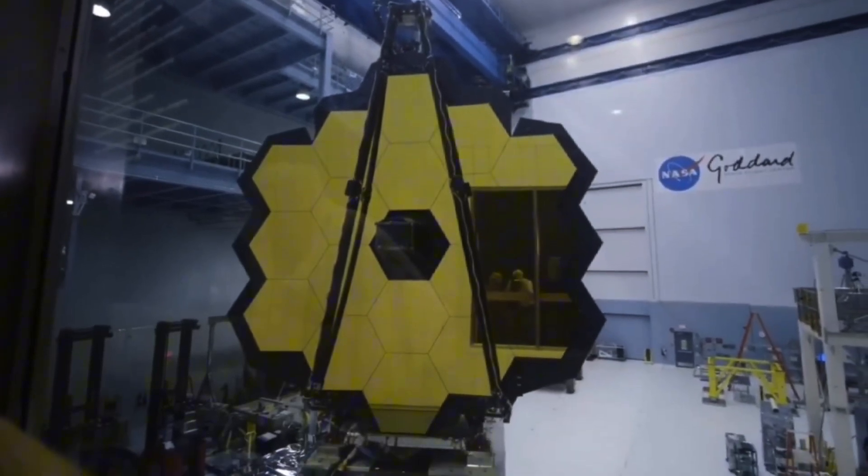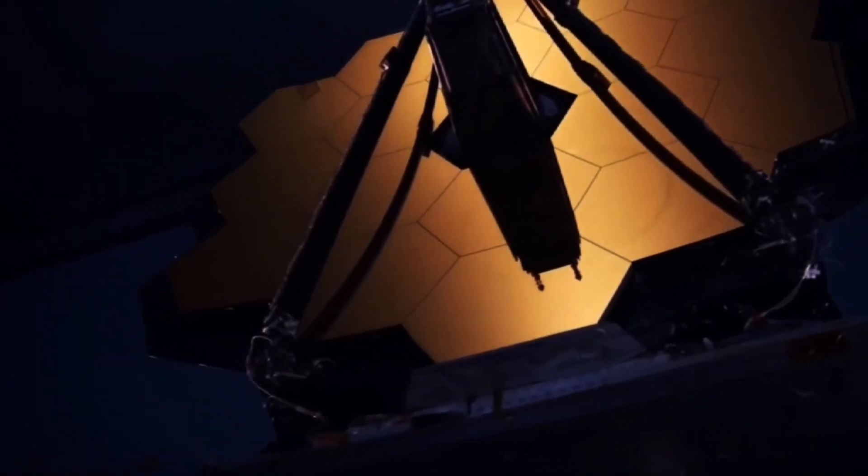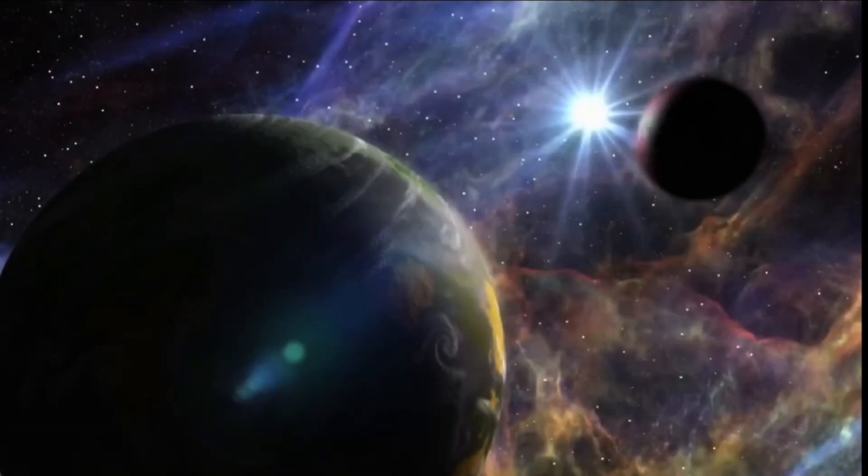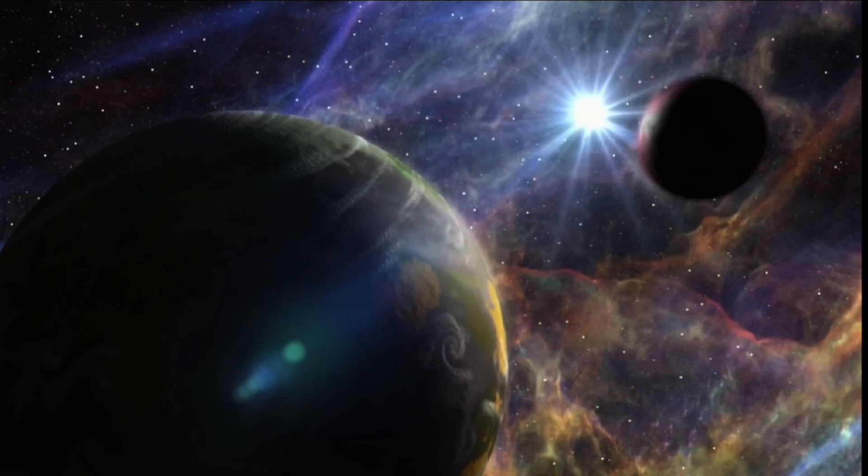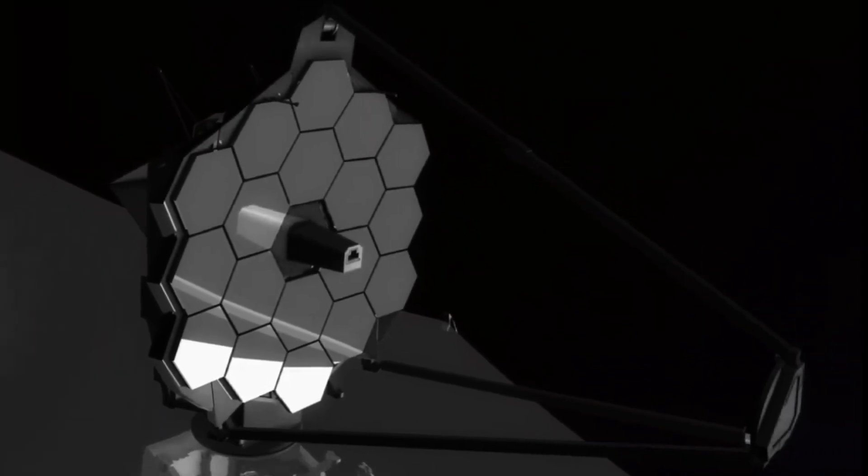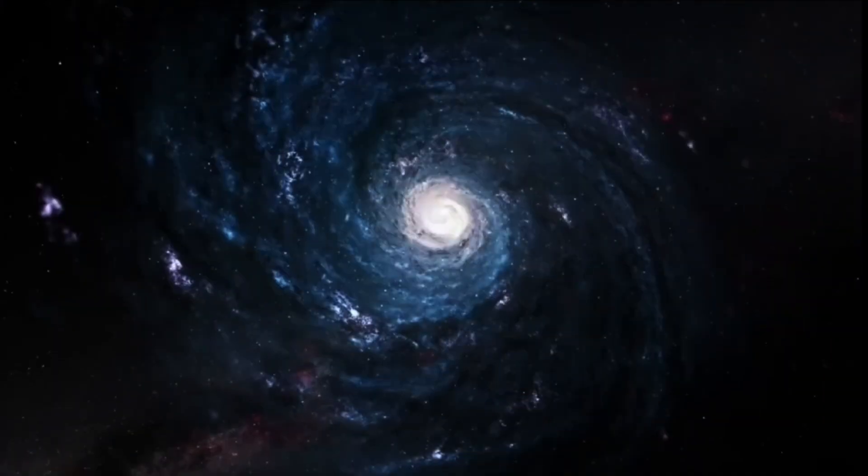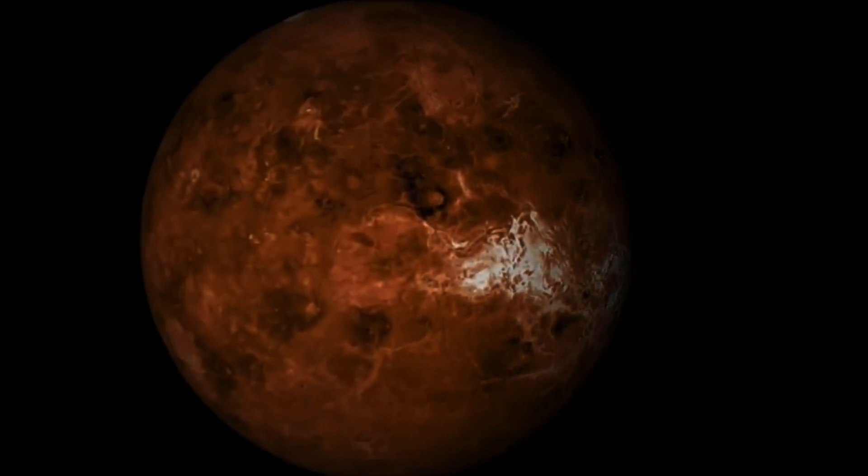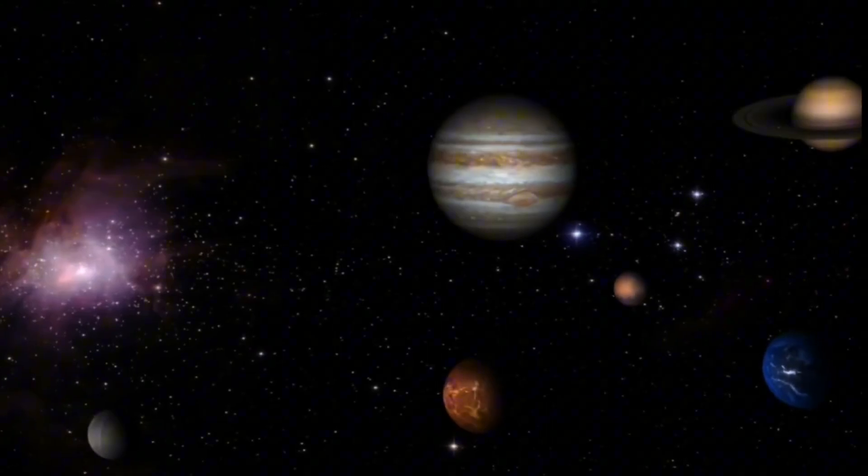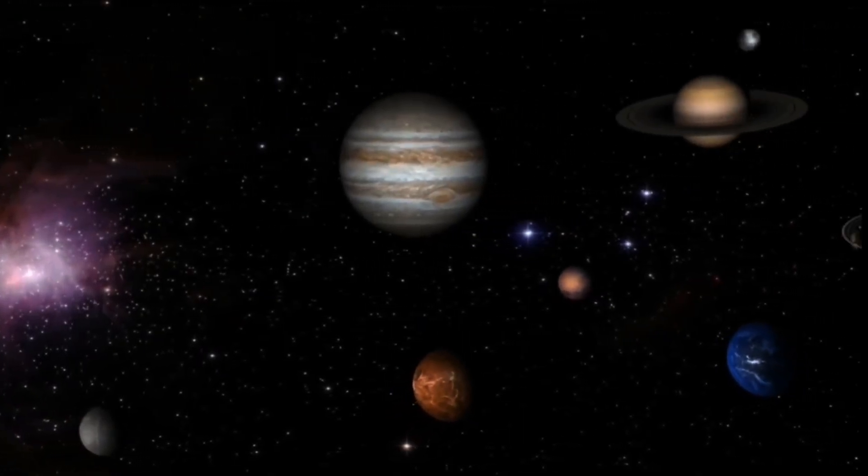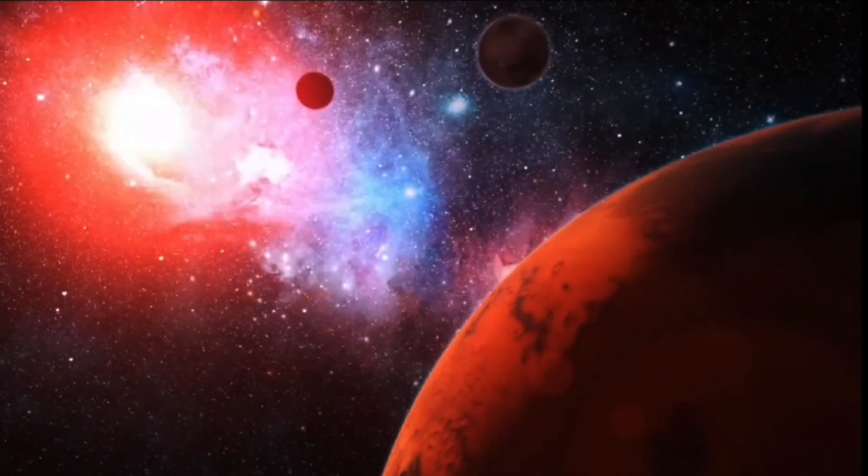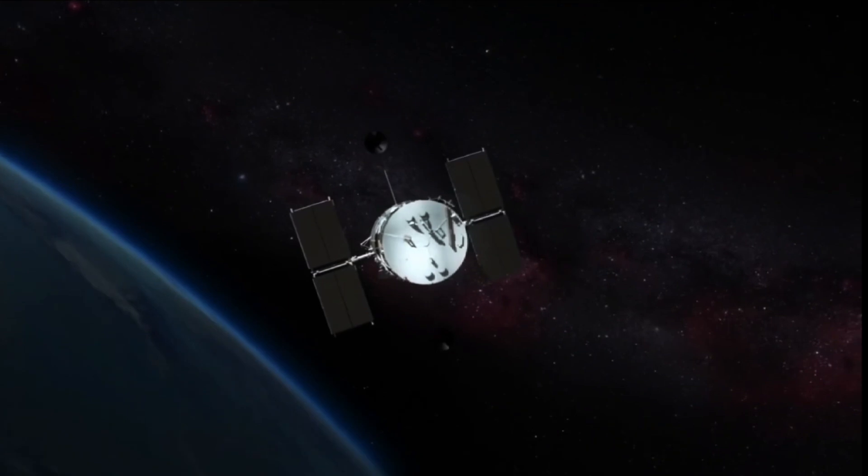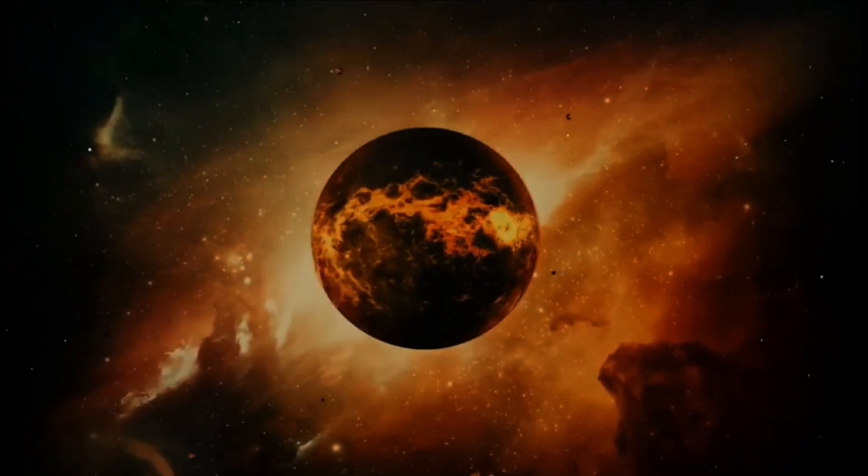But the JWST's goals extend far beyond our solar system. It seeks signs of life in the atmospheres of exoplanets, offering cosmic breadcrumbs that may lead to the discovery of extraterrestrial neighbors. As the JWST races through space, it not only chases radiation from unimaginable distances, but also turns back time, capturing light from the ancient past, revealing the birth of galaxies, stars and cosmic structures billions of years ago. From the galactic dance of Stefan's Quintet to the stellar nursery of the Carina Nebula, the JWST unveils celestial secrets frozen in time, pushing the boundaries of our cosmic understanding.